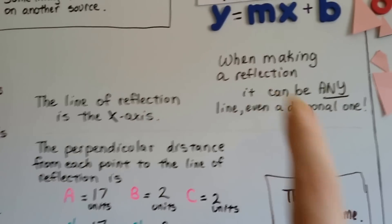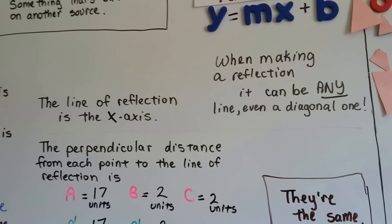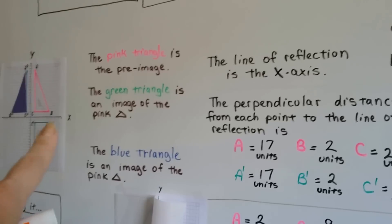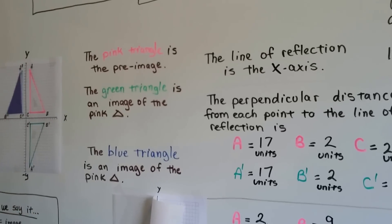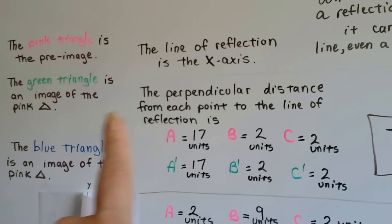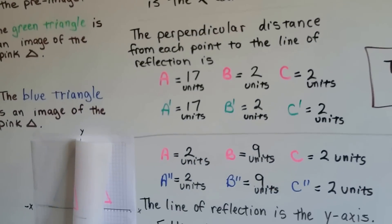Now when making a reflection, it can be any line, even a diagonal one, even one of these lighter colored lines on the grid. It doesn't have to be the x or y-axis, it could be any line. But we're just using the x and y-axis now to make it easy for you.